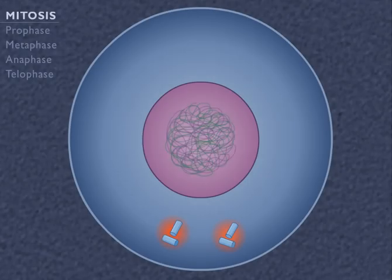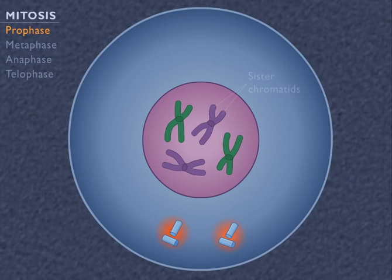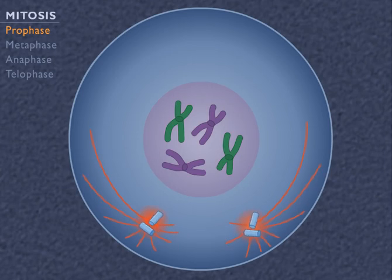During prophase, the chromosomes become visible and condense, becoming shorter and thicker. Each identical copy of a single chromosome is called a sister chromatid. The nuclear envelope breaks down and spindle fibers form as microtubules grow out of the centrioles that move to opposite poles of the cell.